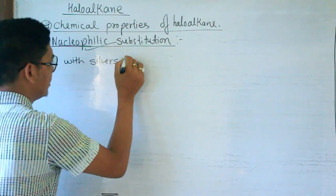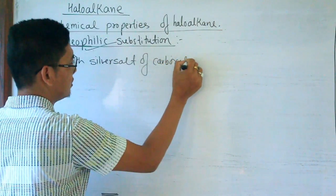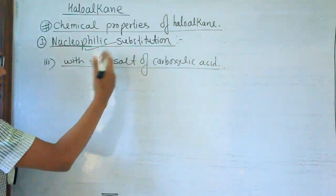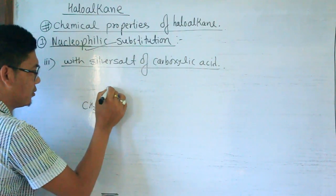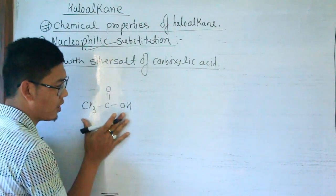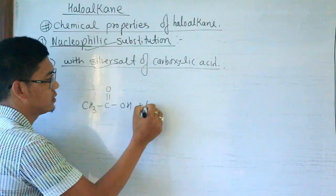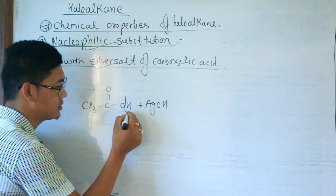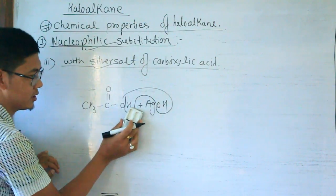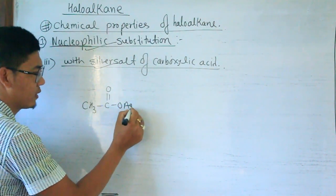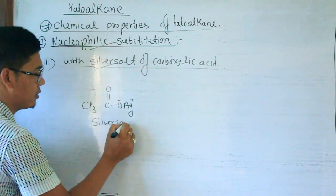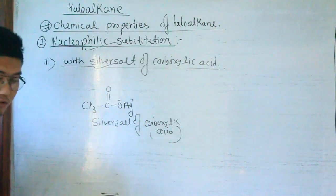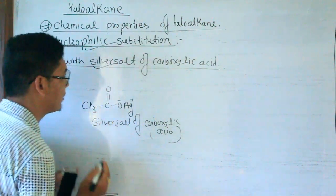Another reaction is with the silver salt of carboxylic acid. For example, CH₃COOH (acetic acid) forms a silver salt via an acid-base reaction: the OH⁻ from silver reacts to give water and the silver carboxylate salt (CH₃COOAg), which is known as the silver salt of carboxylic acid.